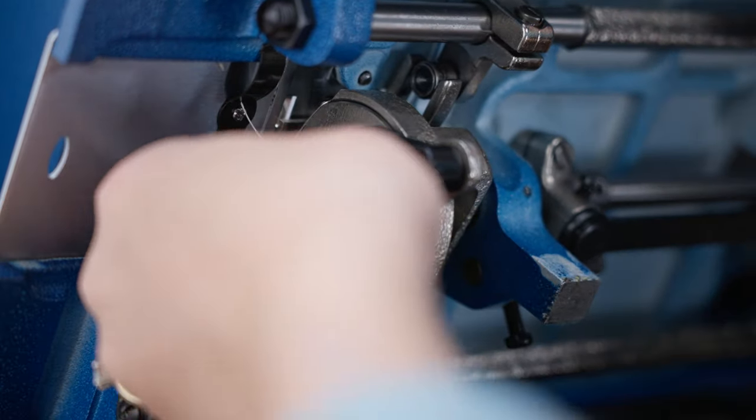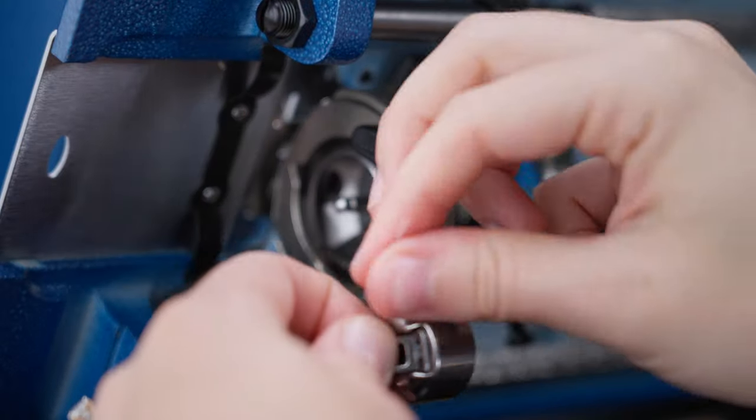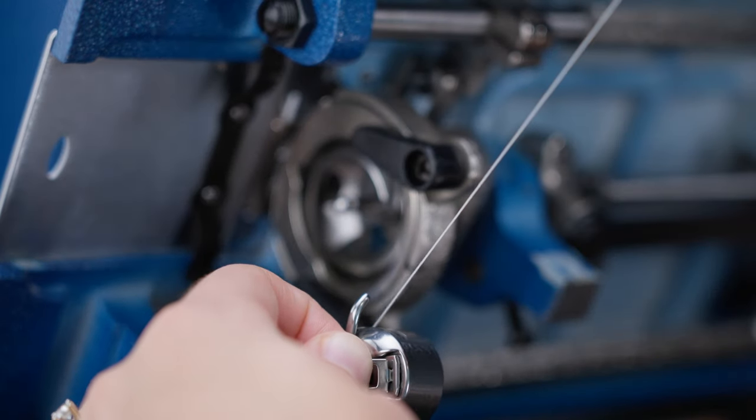If your thread didn't come up with this movement, check to make sure that you have about five to six inches of loose bobbin thread and then repeat these steps.